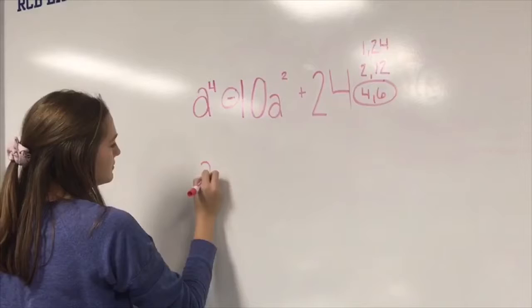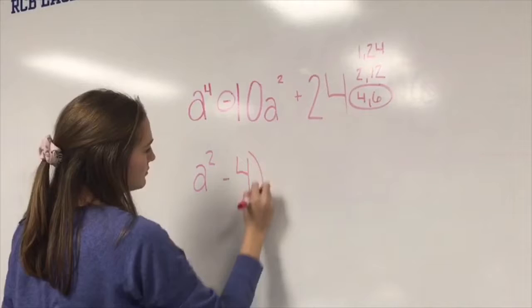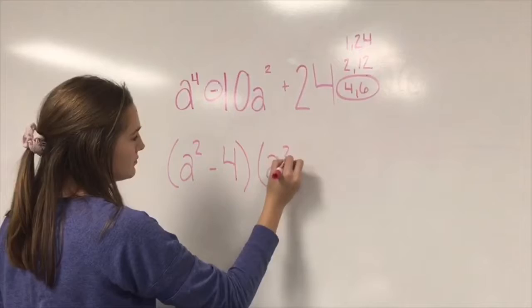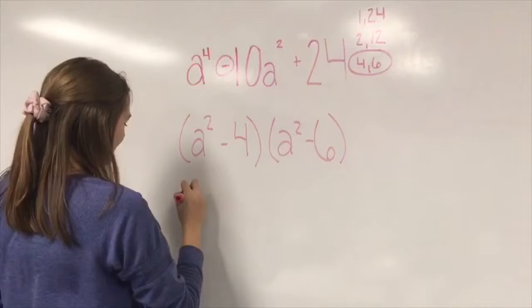I see that that's a negative, so that means I have two subtractions in the factoring. I do a squared minus 4 and a squared minus 6. Okay, that looks right.